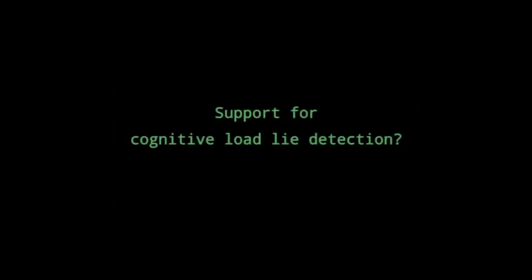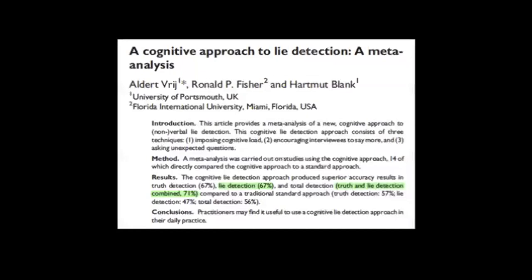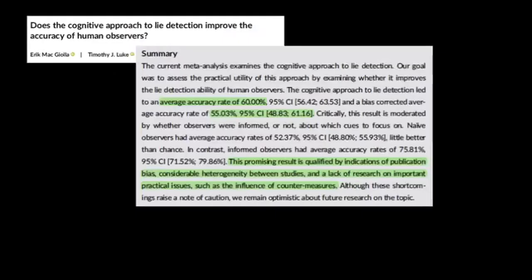So what is the state of the evidence for cognitive load lie detection? There are three relevant meta-analyses on the topic that I could find. When you take them together, they suggest we should be a little skeptical of this idea. The first one indicates that cognitive load lie detection might be quite effective — cognitive load techniques compared to controls led to an accuracy rate of between 67 to 71%. But the meta-analyses that follow don't paint the same picture: the next returned an accuracy rate of 60%, which reduced to 55% after bias correction. This efficacy rate is ostensibly moderated by when observers know what cues to focus on. But as the authors themselves mention, this literature is plagued with publication bias and a lack of research on countermeasures.